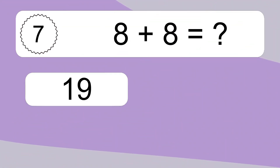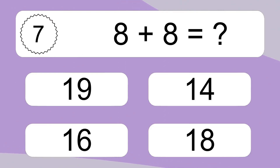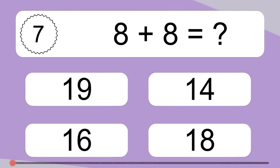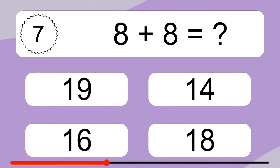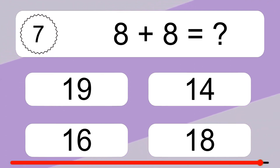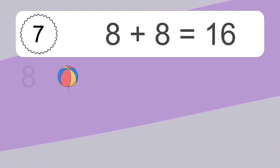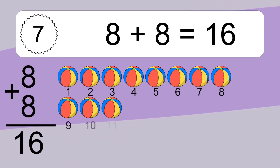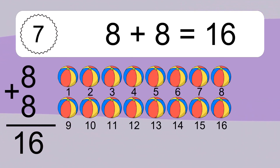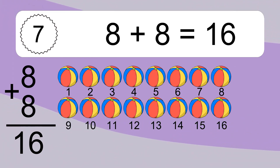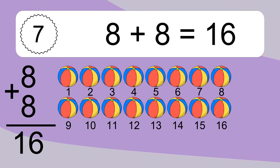8 plus 8 equals what? 8 plus 8 equals 16. 1, 2, 3, 4, 5, 6, 7, 8, 9, 10, 11, 12, 13, 14, 15, 16.